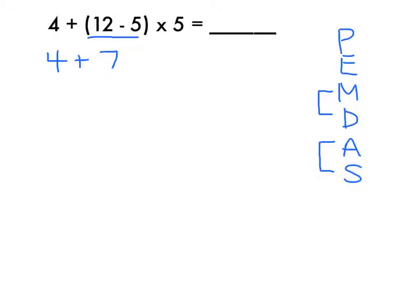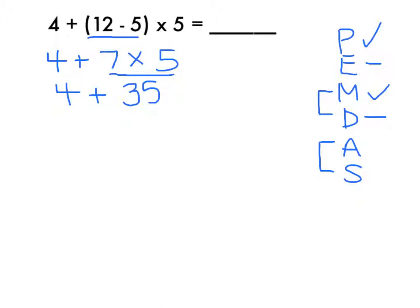Then we write 4 plus 7, then times 5. By only solving one step at a time and keeping track, we keep our work organized. There are no exponents. Now we have multiplication or division — we're not going to do 4 plus 7, because we need to do 7 times 5 first. 7 times 5 is 35. We copy the line and check that off. Now we're at addition: 4 plus 35 equals 39, and that is our final answer.